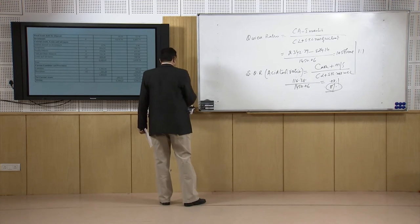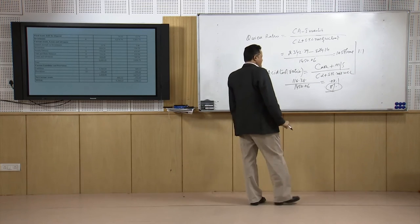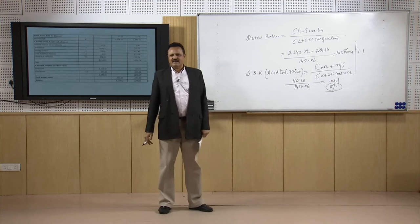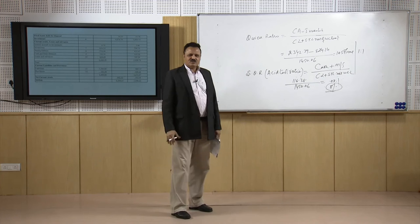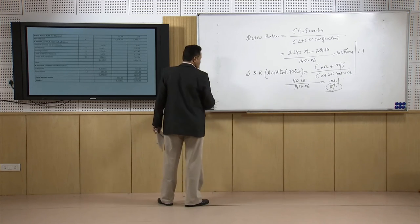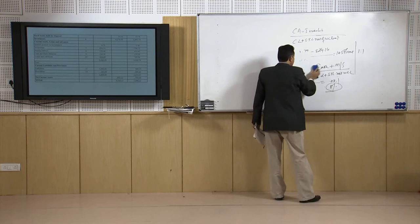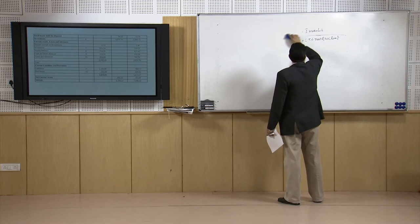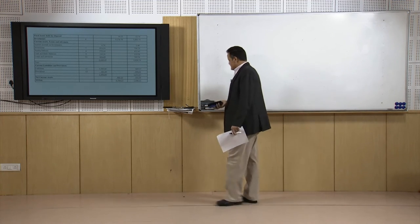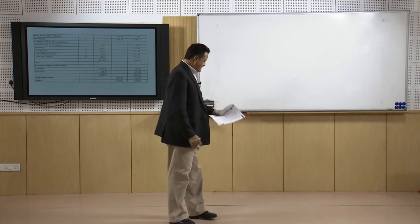The acid test ratio works out as 0.08:1, meaning cash and bank balances represent only about 8 percent of total current liabilities. While this appears low, keeping 8 percent cash is not bad — keeping a higher amount of cash is also not justified because the cost increases. They are maintaining a nominal, optimum amount of cash. The acid test ratio is within range, and this prudent financial management has improved the firm's overall performance.